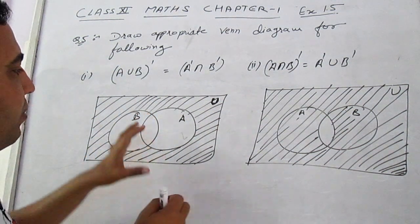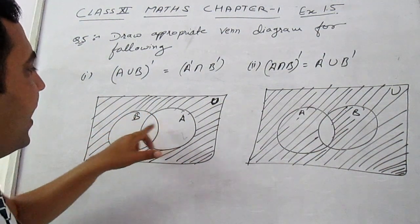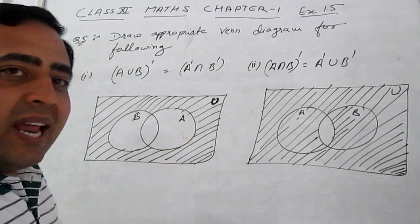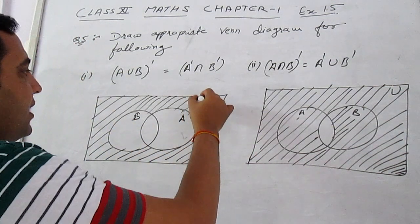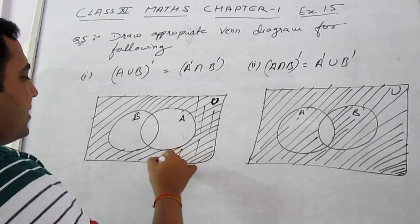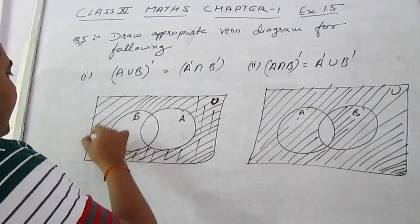In A union B, all elements of A and B come. Its complement contains the remaining elements of the universal set, which are the elements that do not come in A union B.